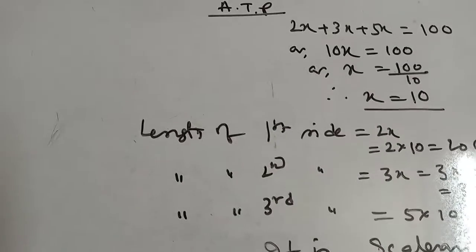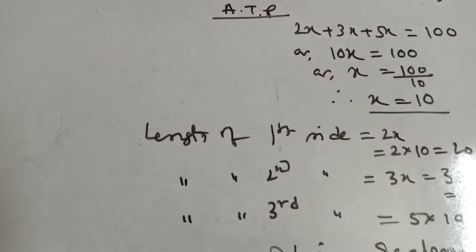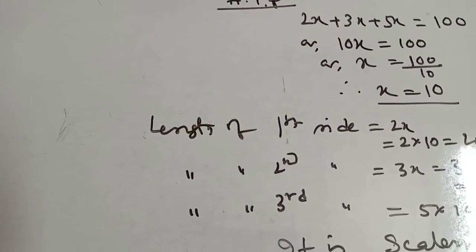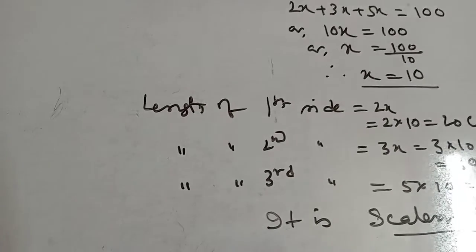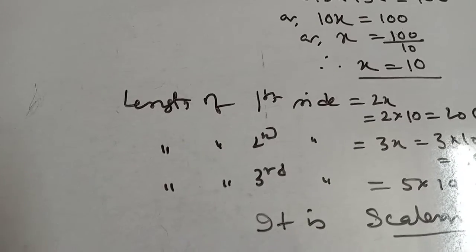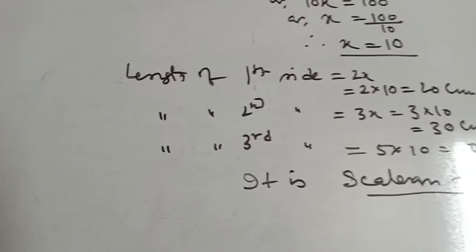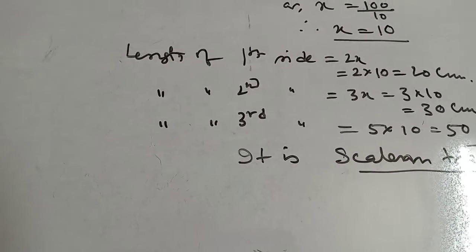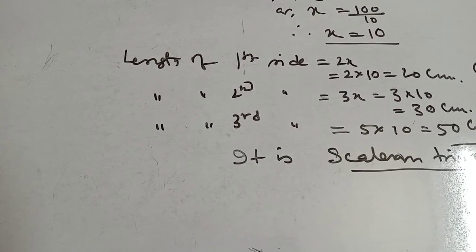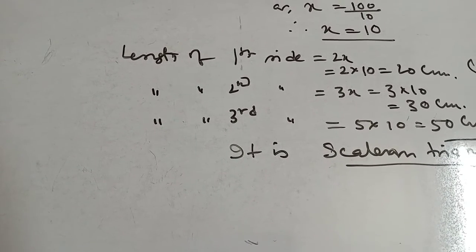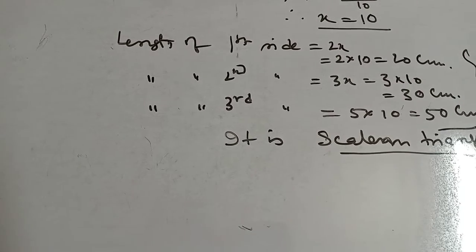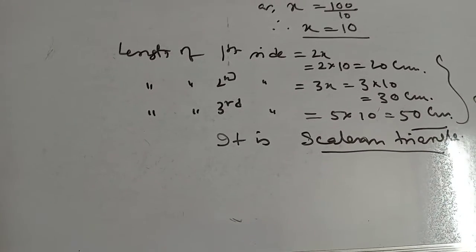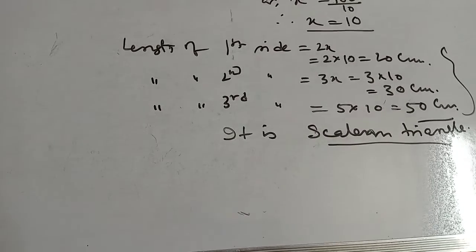The ratio of sides is given as 2:3:5. Let the common ratio be x, so length of sides are 2x, 3x, and 5x. Perimeter is given as 100. Perimeter means sum of 3 sides, that means 2x plus 3x plus 5x equals 100. From calculation, we get the value of x equal to 10. Now length of first side: 2x = 2 into 10 = 20 cm. Second side: 3 into 10 = 30 cm. And third side: 5 into 10 = 50 cm. That means it is called a scalene triangle.